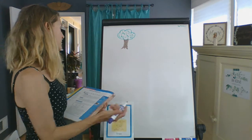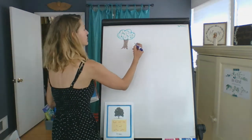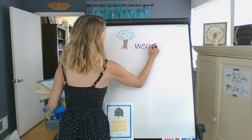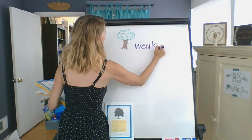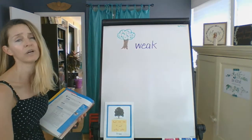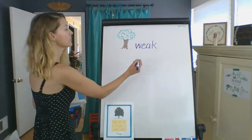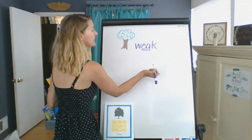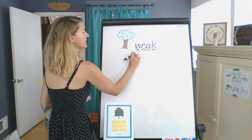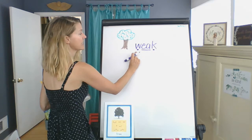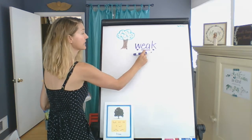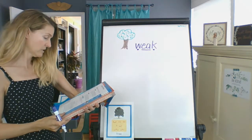For an example, we have the word 'weak' — not the week like seven days, but like 'I'm feeling weak.' So we have W-EA-K. Each of these is a sound: W-E-K. The EA goes together to make the long E sound.